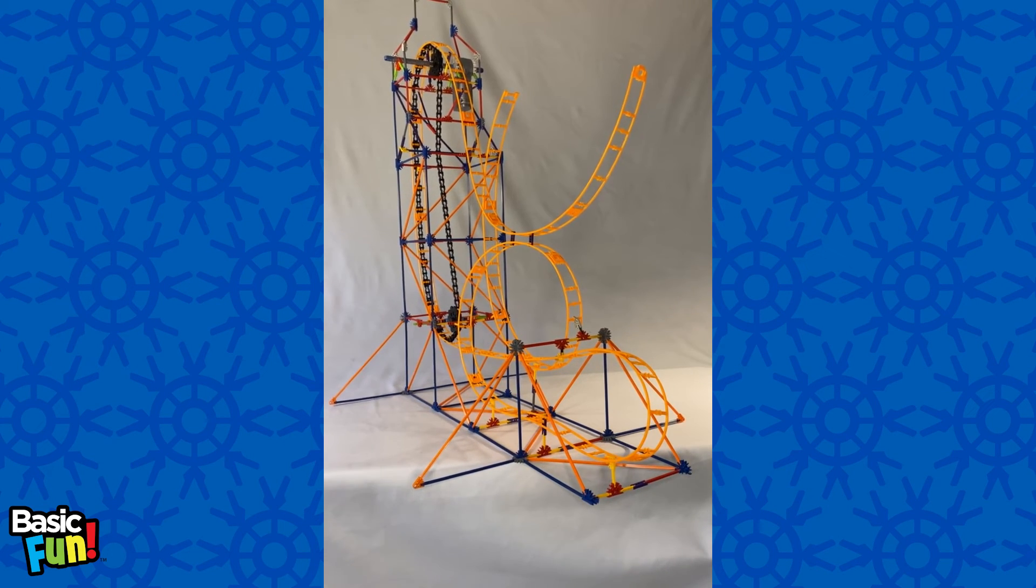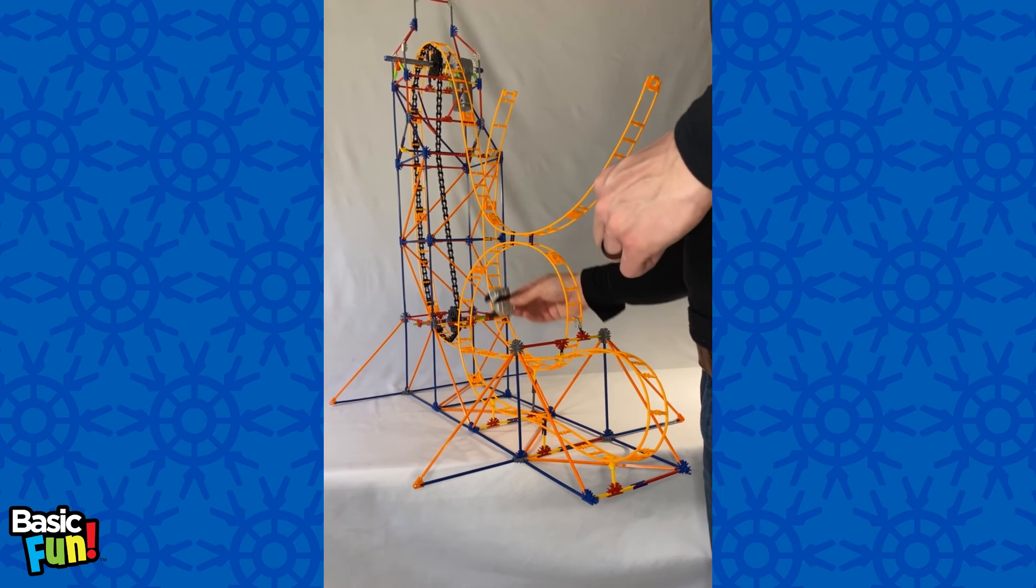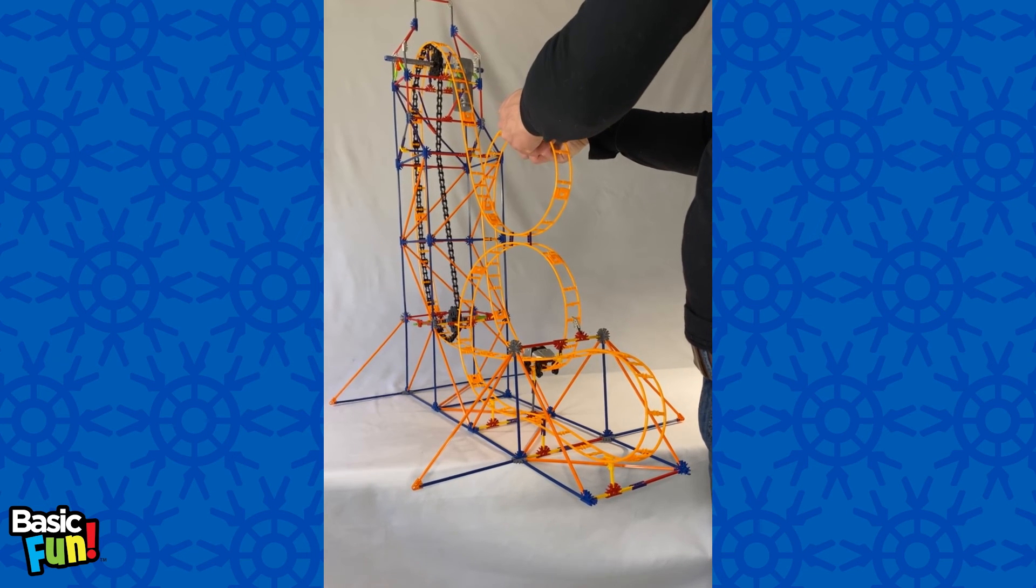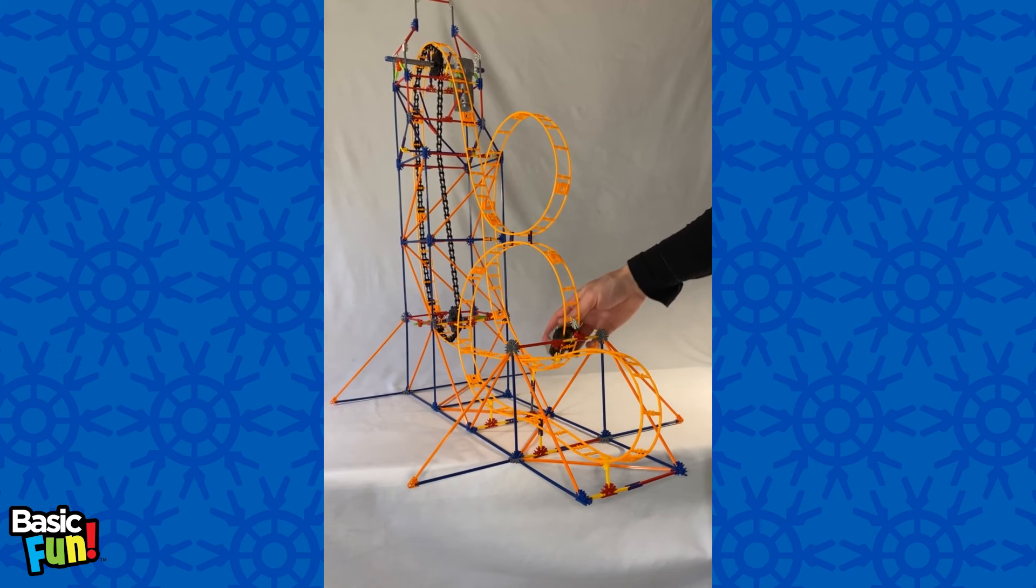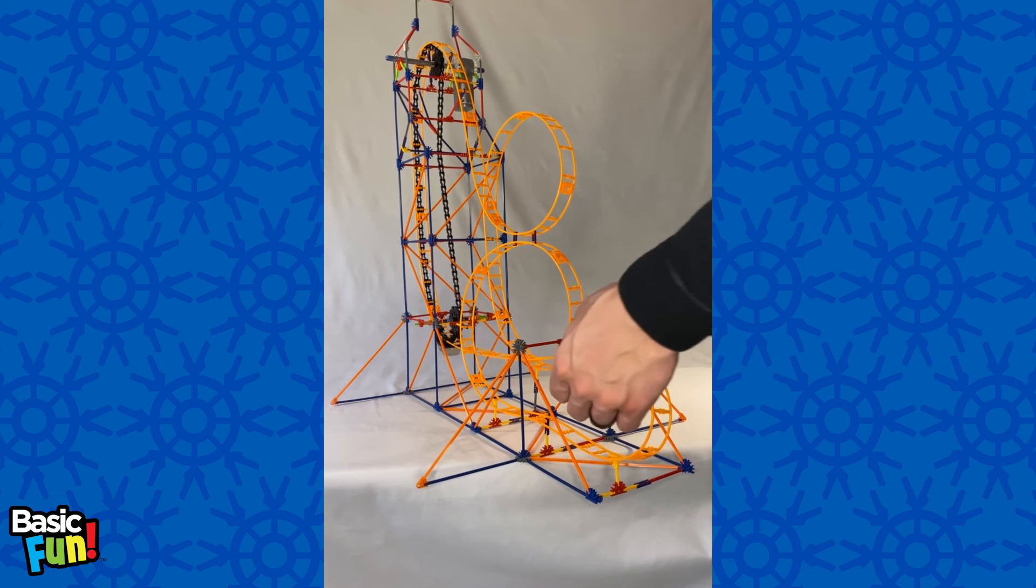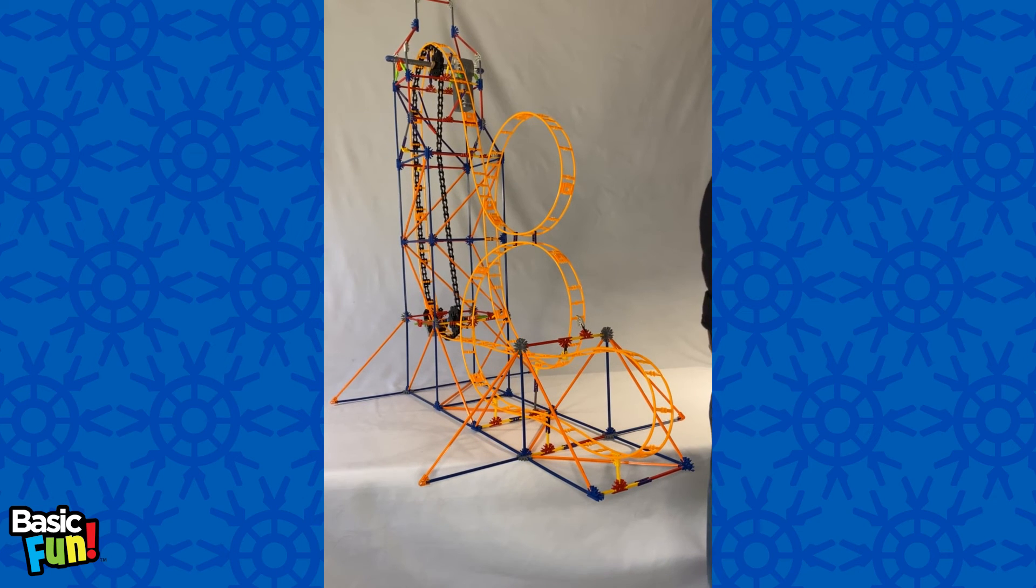then just take the coaster car, slide it on, and then just reconnect the two pieces of track. Then I'm just going to slide the car along here and let that catch onto the chain drive. Now the only thing left to do is turn the motor on.